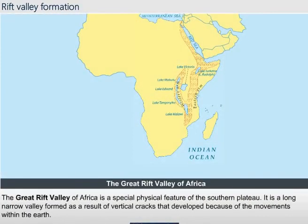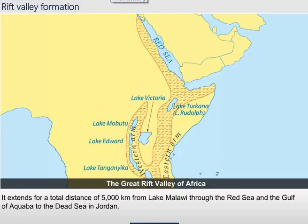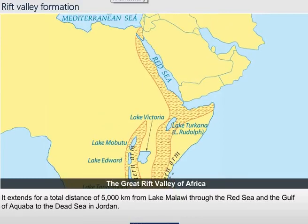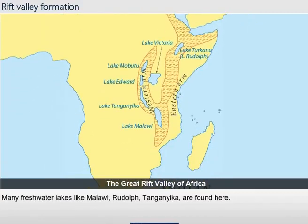The Great Rift Valley of Africa is a special physical feature of the southern plateau. It is a long narrow valley formed as a result of vertical cracks that developed because of the movements within the earth. It extends for a total distance of 5,000 km from Lake Malawi through the Red Sea and the Gulf of Aqaba to the Dead Sea in Jordan. Many freshwater lakes like Malawi, Rudolf, and Tanganyika are found here.